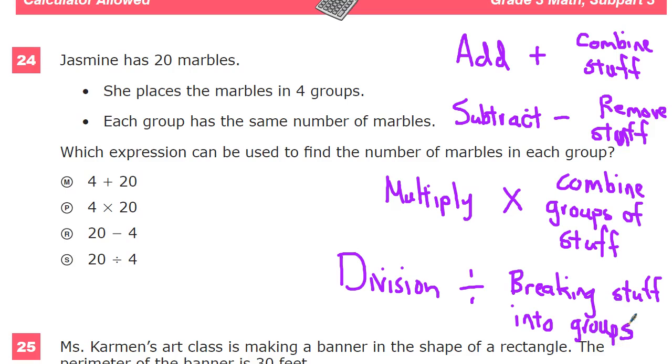So it's the opposite. In one, for multiply, I already have the groups made and I combine them together. The groups should be all the same. So if I have 3 groups of 4, I'll multiply, and it will give me this much stuff, 12 stuff.